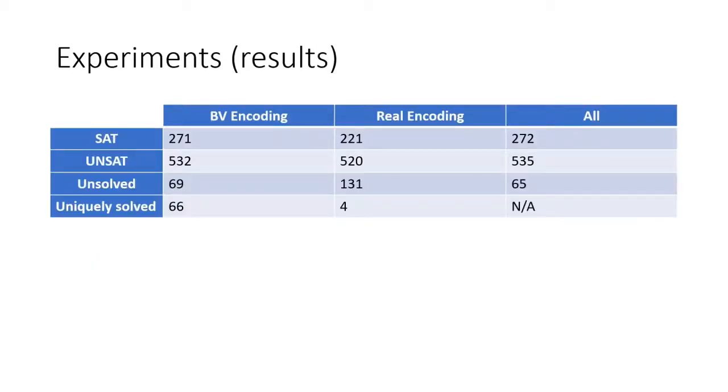This table summarizes the results of our benchmarking efforts. The bitvector and real encoding columns indicate the results as if the solvers for these theories were treated as a portfolio solver. The all column summarizes the results as if all solvers were treated as a portfolio solver. We can see overall that the bitvector encoding is much better for finding SAT instances. For unsat queries, the two encodings are more competitive. From the all column, we see that only 65 out of 872 benchmarks were unsolvable given our benchmark time limits. Here we see the number of benchmarks solved by one theory and not the other. Interestingly, the real encoding solved four benchmarks uniquely, three of which were unsat. It can be seen that the bitvector encoding is more efficient overall. However, the real encoding gives some results we may otherwise have missed.